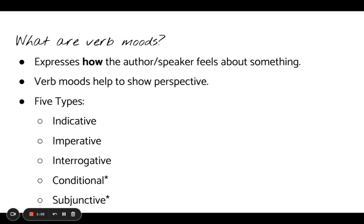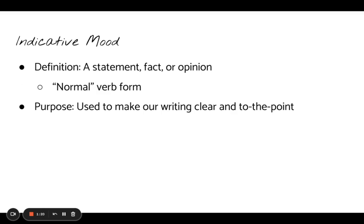Now, the first three should look familiar because they are the same as the types of sentences that we discussed in the parts of a sentence unit. But the conditional and subjunctive will also be easy once we go over them. So the indicative mood is when verbs are used to express a statement, a fact, or an opinion. This is considered the normal verb form, because most of the time as humans we speak in the indicative mood. We use it in our writing to make things clear and to the point.